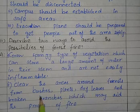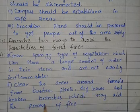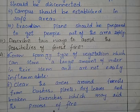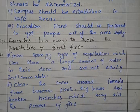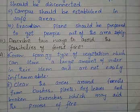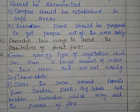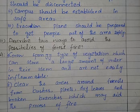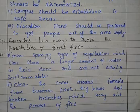Second way: clear the areas around the forest from bushes, plants, dry leaves and broken branches which may aid the process of fire. اس کے علاوہ forest کے اندر سے تمام areas کو صاف کر لینا چاہیے — جھاڑیاں، پودے، خشک پتے اور ٹوٹی ہوئی شاخوں کو وہاں سے ہٹا دینا چاہیے تاکہ وہ آگ کو نہ پکڑ سکیں۔